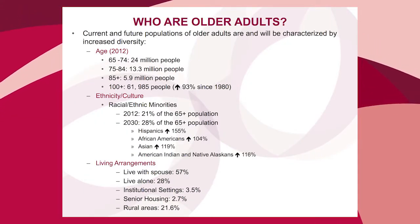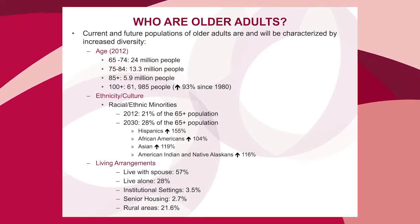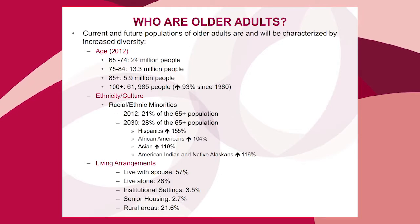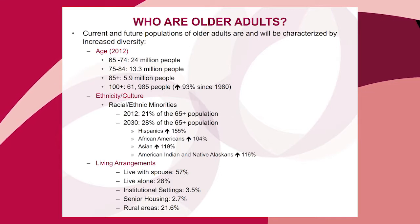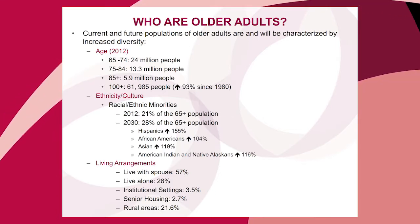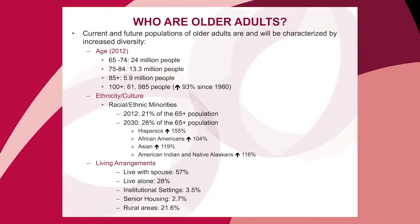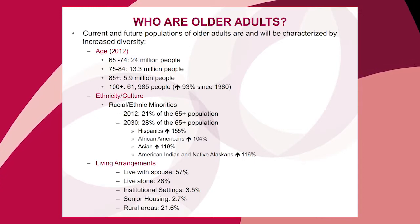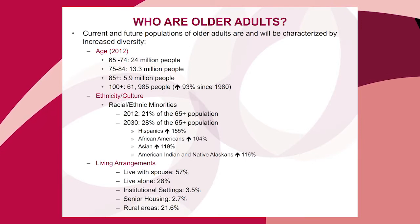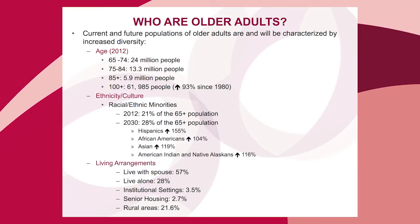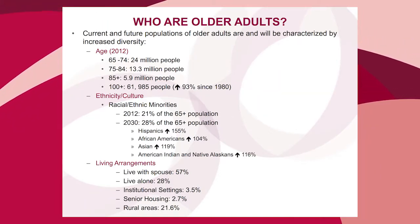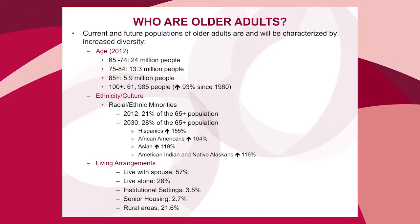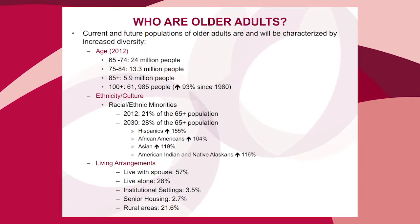Looking at who older adults are, we're seeing very significant trends. Not only is there an increase in the 65-plus population, but a very important trend is the increase in the oldest-old population. In fact, the number of people in their hundreds has gone up 93 percent since 1980. This has implications for technology — we can't lump 65-year-olds into one age group.